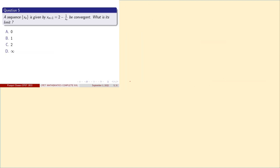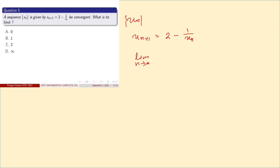This is question 5. We have a sequence {Xn} defined by Xn+1 = 2 - 1/Xn. We need to show the sequence is convergent. If the sequence is convergent, then both the nth term and the (n+1)th term converge to the same limit L.